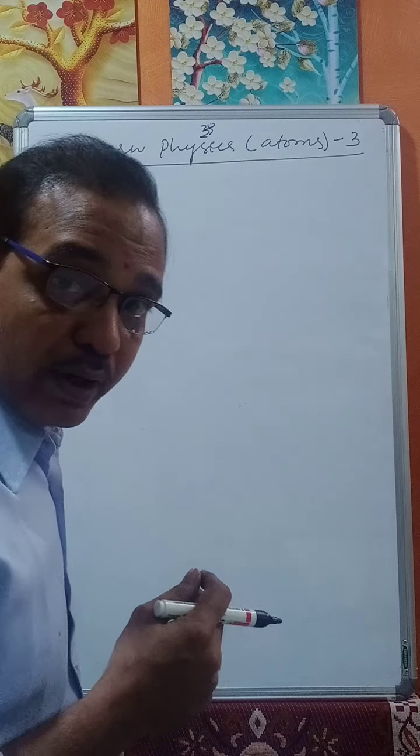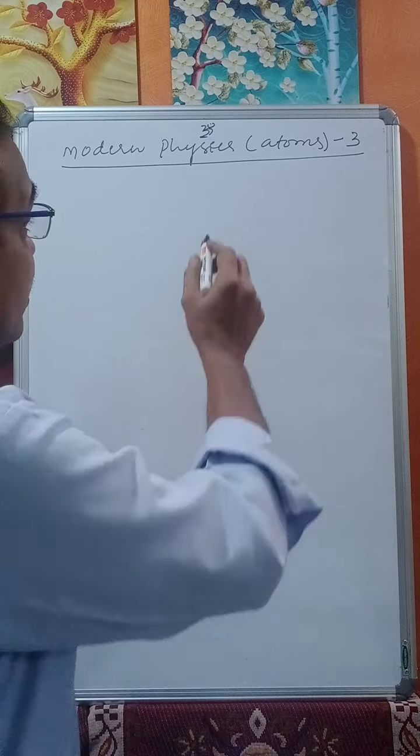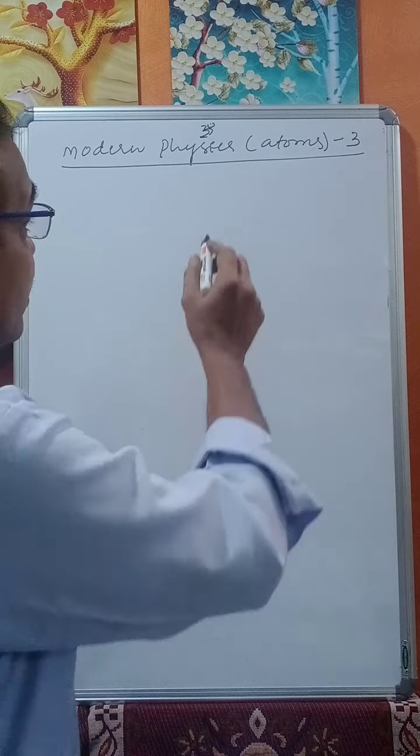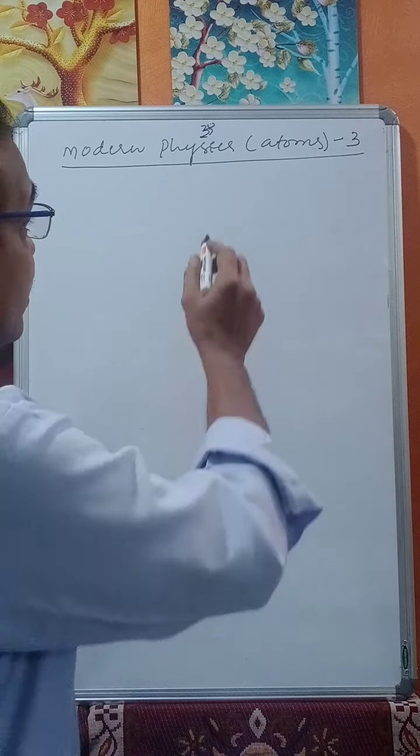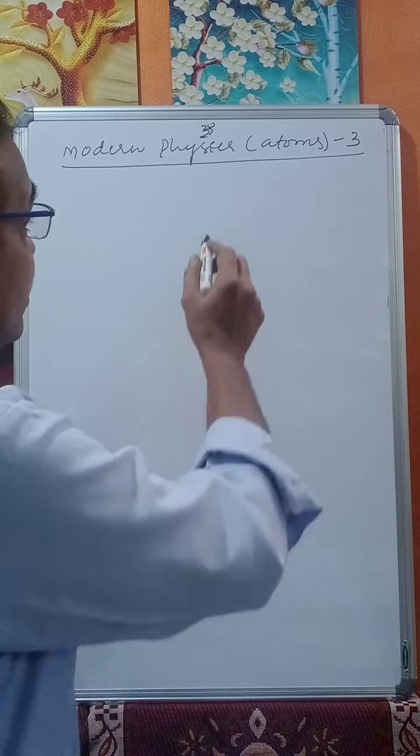Now let us see what the Rydberg constant is, what the wave number is, and the wavelength. Let us see all these in lesson 3. Now we have from the second postulate: